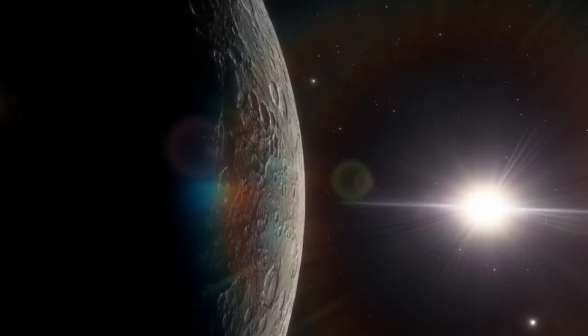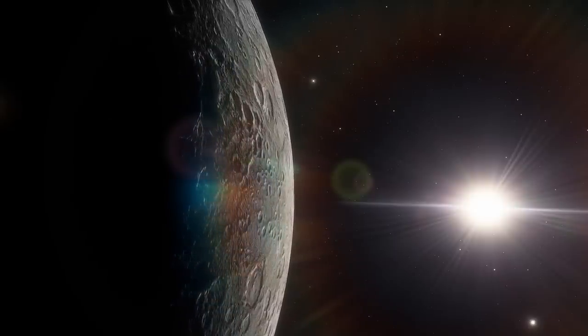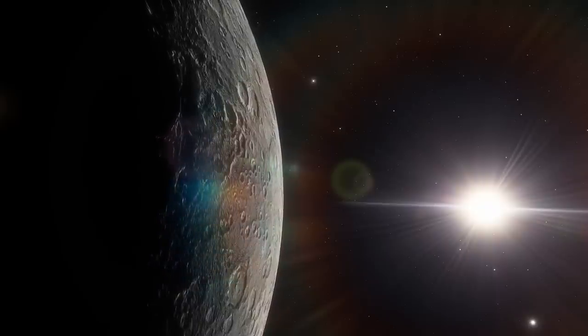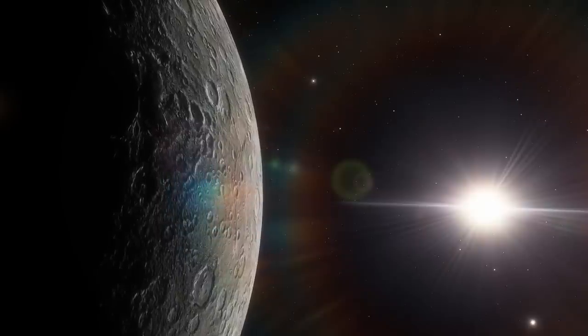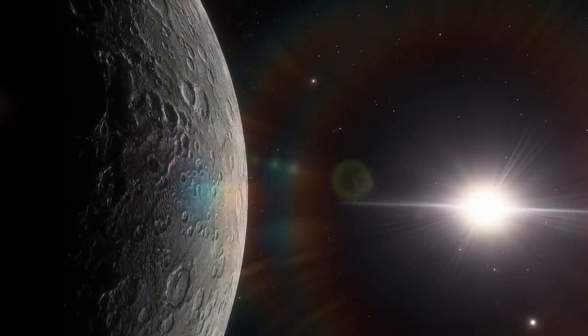Like the Earth and Venus, Mercury is telluric, that is to say that it is composed of rocks and metals. Because of the bombardment of its surface by solar winds, it is almost devoid of atmosphere.